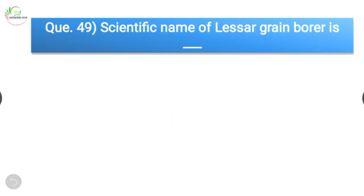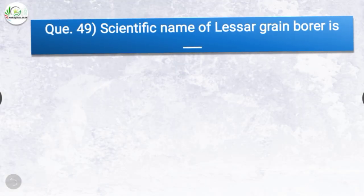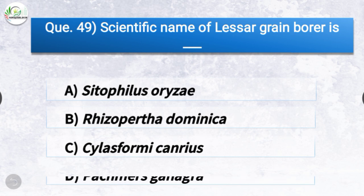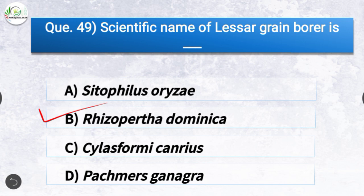Question number forty-nine: Scientific name of lesser grain borer is dash. The correct answer is option B, Rhyzopertha dominica — the scientific name of lesser grain borer is Rhyzopertha dominica.